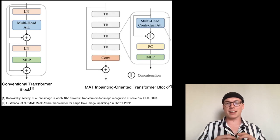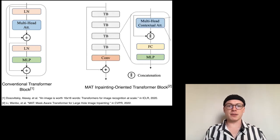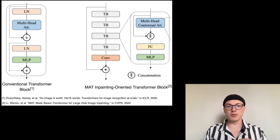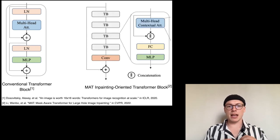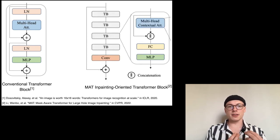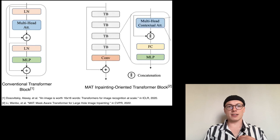The first major change is the adjusted transformer block. On the left we have the conventional transformer block and on the right the inpainting-oriented MAT transformer block. The major difference is that layer normalization is no longer applied in the inpainting-oriented block — the authors justify this by arguing that layer normalization magnifies the useless tokens, leading to unstable optimization during training. The second difference is that the residual connection is replaced by a fusion learning approach: instead of element-wise adding the multi-head attention output, the results are concatenated with the input to multi-head attention.